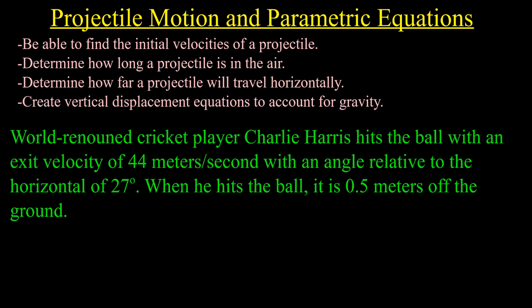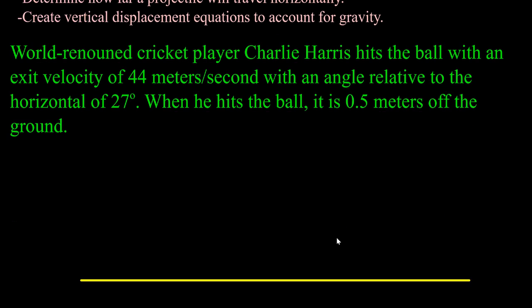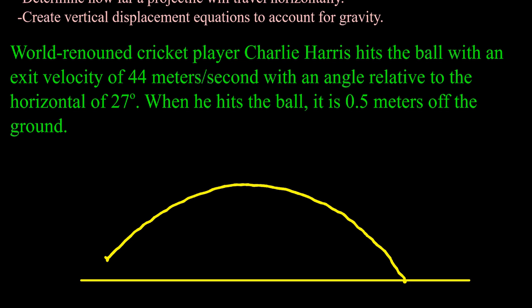We're going to deal with one situation, and this example will cover pretty much everything we need to know for projectile motion. We've got world-renowned cricket player Charlie Harris from Auckland, New Zealand, who hits the ball with an exit velocity of 44 meters per second at an angle of 27 degrees relative to the horizontal. When he hits the ball, it is half a meter off the ground. He hits the ball and it goes up, comes down, and splats on the ground.